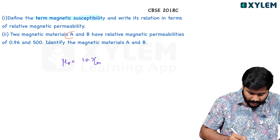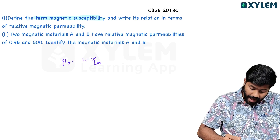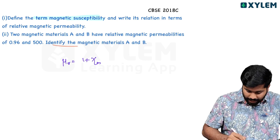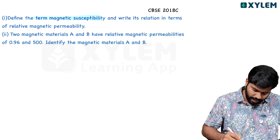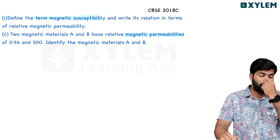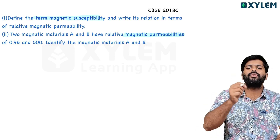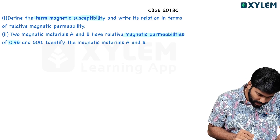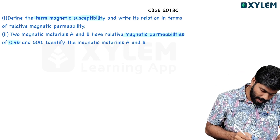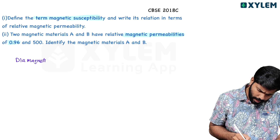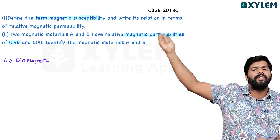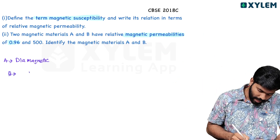Application: Two magnetic materials A and B have relative magnetic permeability 0.96 and 500 respectively. Identify materials A and B. Relative permeability 0.96 is less than 1, so material A is diamagnetic. Material B has a large value of 500, so material B is ferromagnetic.